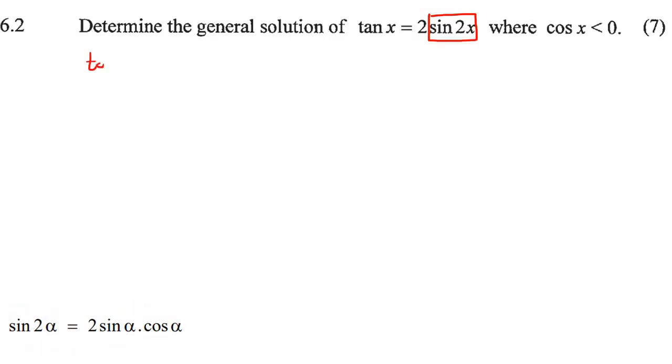So we can say tan x is equal to 2. Now we're going to expand this part here, so it's going to be another 2, sin x, cos x. So that's going to end up giving us tan x equals to 4 sin x cos x.